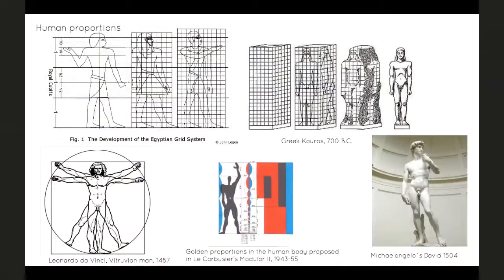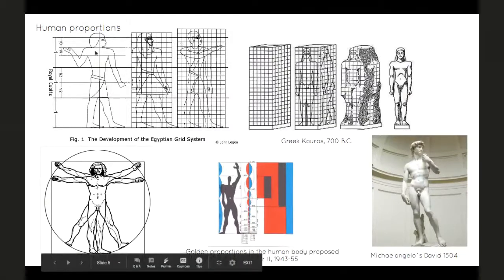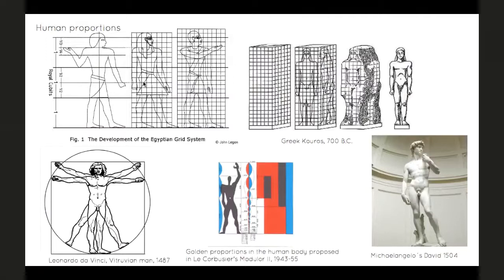Let's start from the beginning — how we represent the human body. The Egyptians used a grid system. They divided the figure into a rigid grid where everything was even, dividing the human figure into 21 equal squares from the eyes to the feet, with one and a half or two more squares from the eyes to the top of the head or headdress. So you can see this is completely mathematical — very rigid.